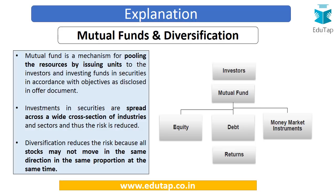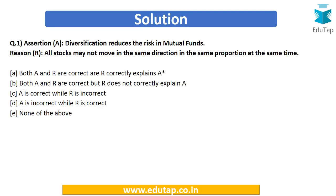So we can now answer this question: the assertion — diversification reduces the risk in mutual funds — is very much true, and the reason — that all stocks in the portfolio may not move in the same direction in the same proportion at the same time — is also correct and is the correct explanation. Therefore, option A is the correct answer.